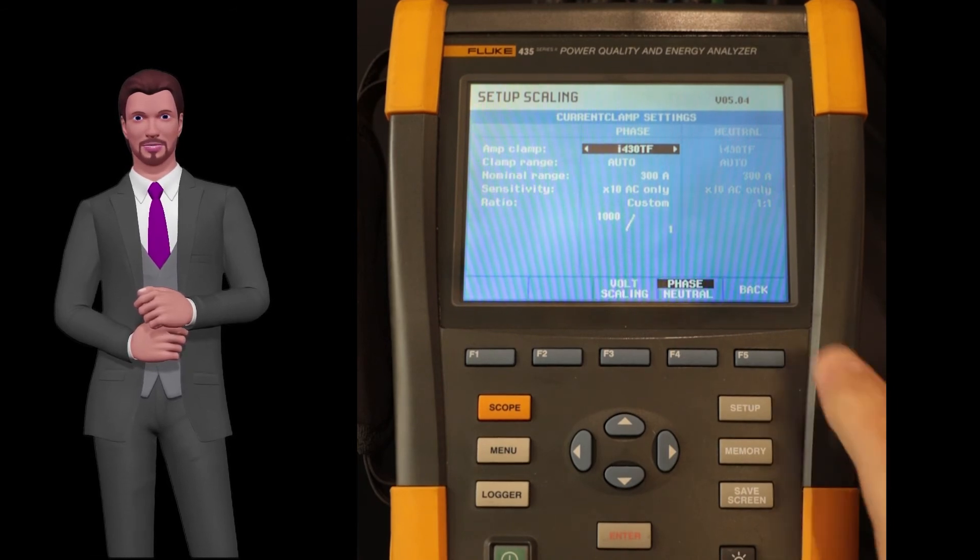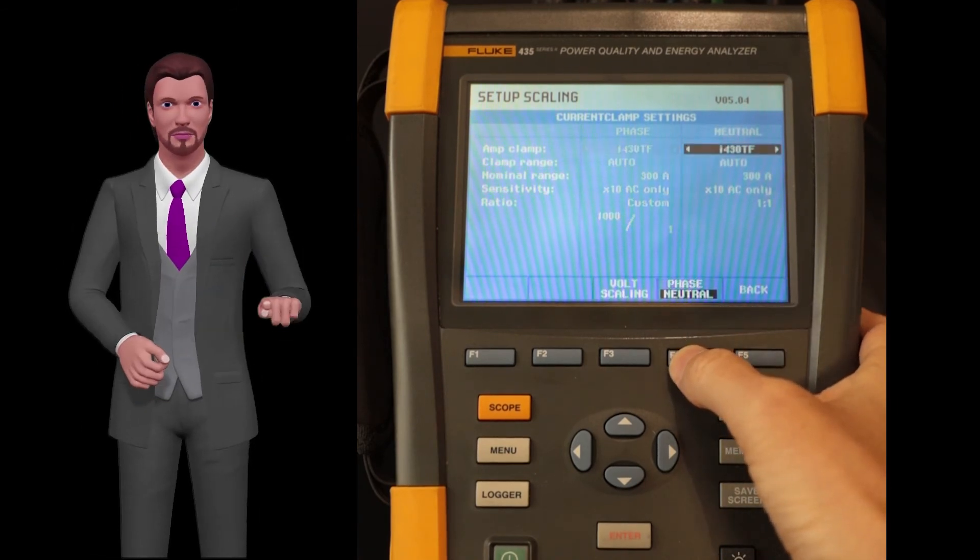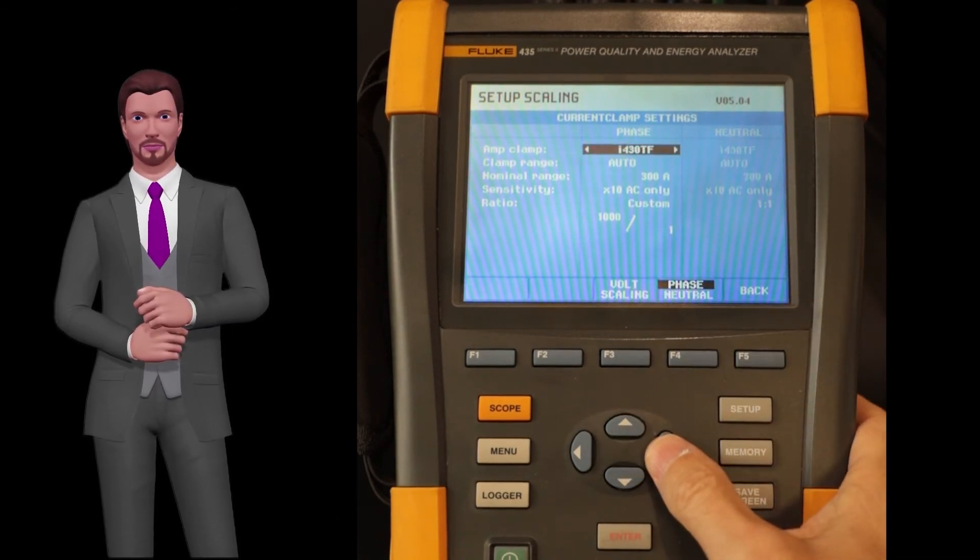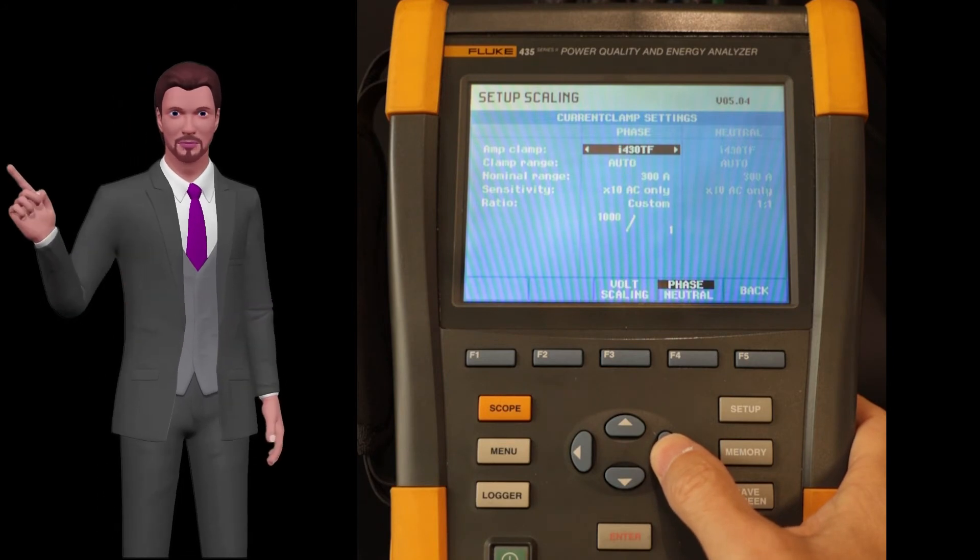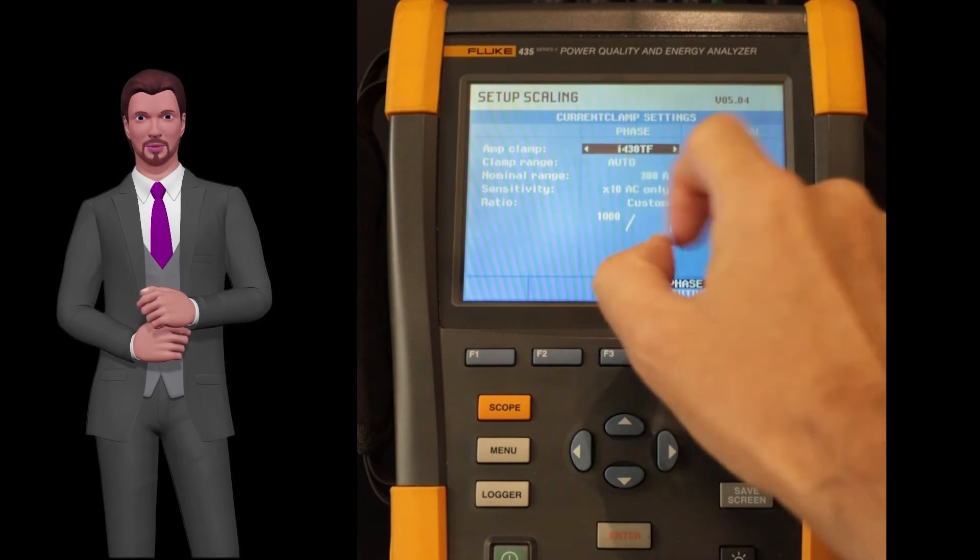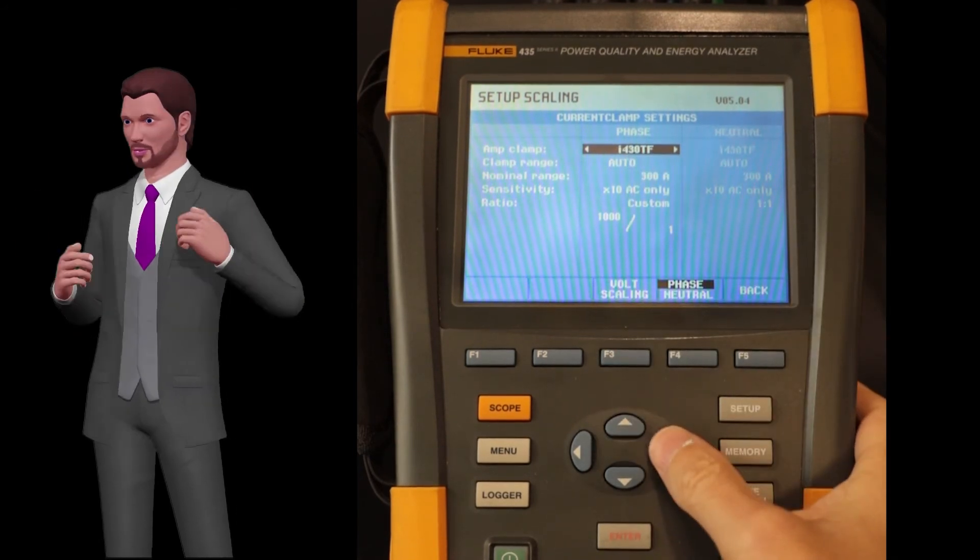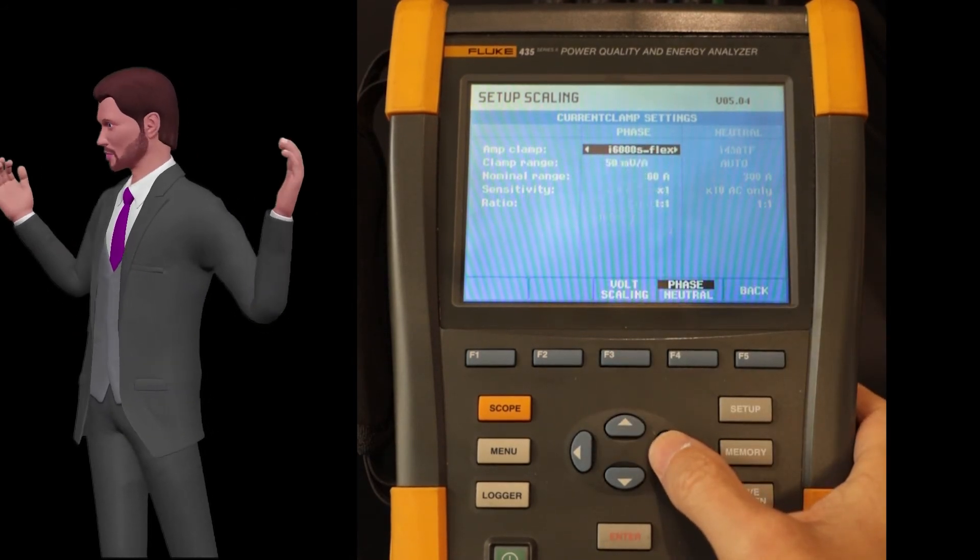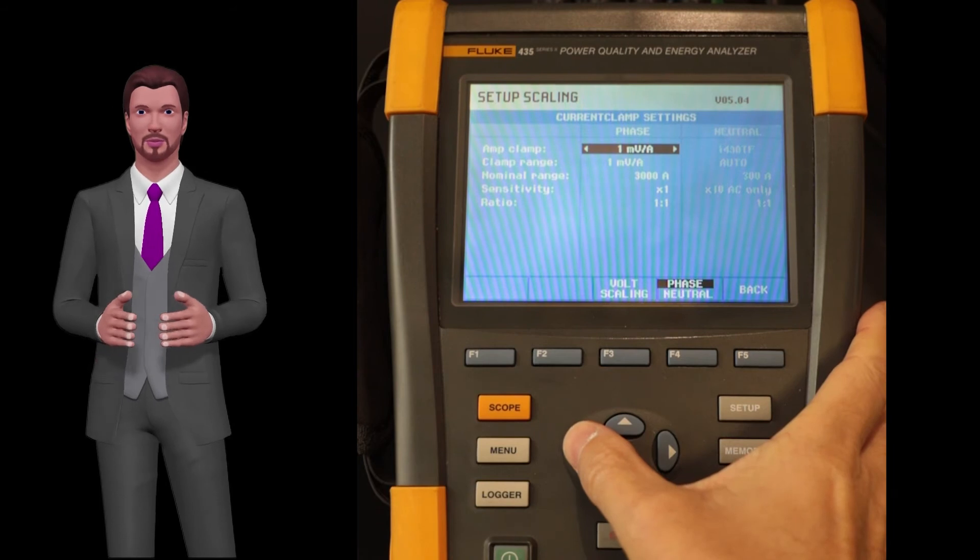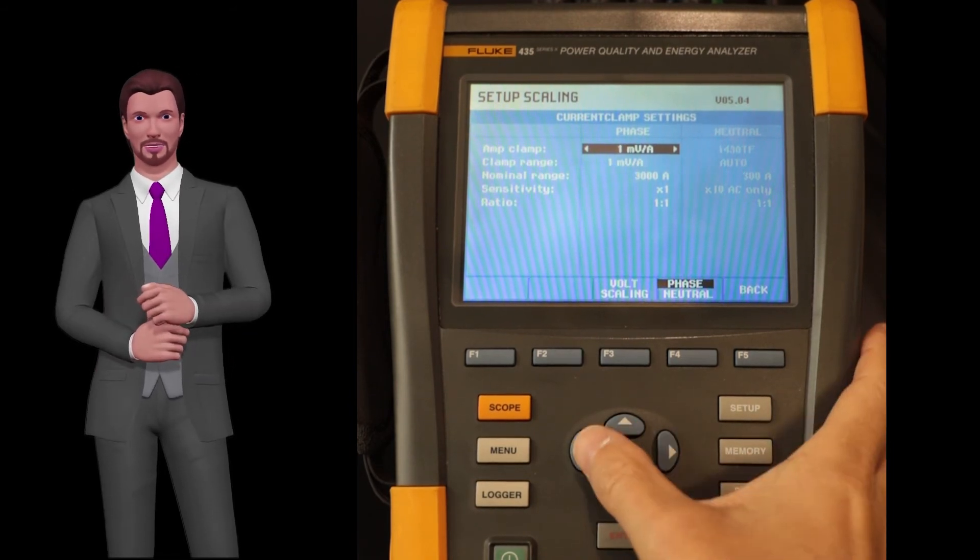We can switch between phases and neutral with the F4 key. The first parameter that appears is the probe model that we are going to use. If the standard flexible probes supplied with the unit are used, this model is indicated as I-430 TF. But if another probe is used, we can change this parameter with the left and right arrows. You can, for example, choose a probe with a given millivolt per ampere output, for example 10 millivolts per ampere.